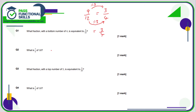Question two is a fraction of an amount: what is seven sixths of 18? What we need to do is take our total, divide it by the number on the bottom, then multiply by the number on the top. 18 divided by six is three, and three times seven is 21.